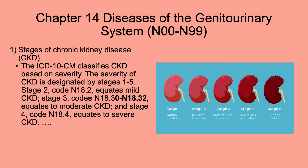Chapter 14, diseases of the genitourinary system. They added more specific digits for chronic kidney disease. Previously N18.3 was used; now it's expanded to N18.30 through N18.32, incorporating the current staging for Stage 3 — unspecified Stage 3, Stage 3A, and Stage 3B. Again, more specific and more accurate than before.